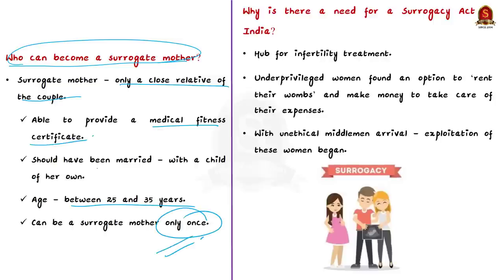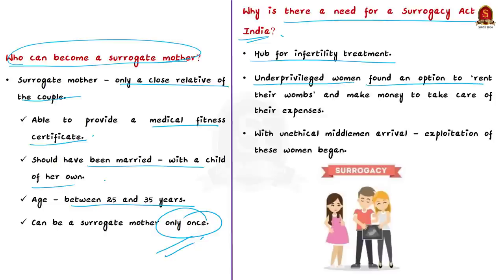Now we will see why there is a need for a Surrogacy Act in India. India emerged as a hub for infertility treatment, attracting people from around the world with its state-of-the-art technology and competitive prices. Due to prevailing socio-economic inequalities, underprivileged women found an option to rent their wombs to make money — often to facilitate a marriage, enable children to get an education, or provide for hospitalization of someone in the family.